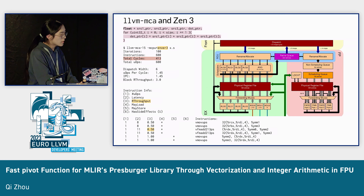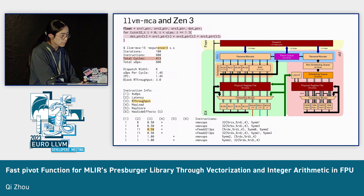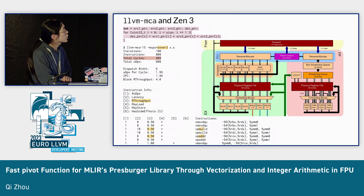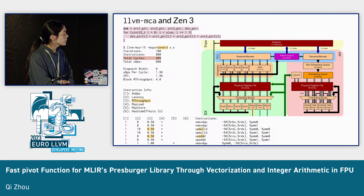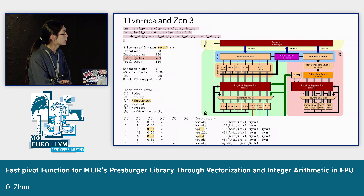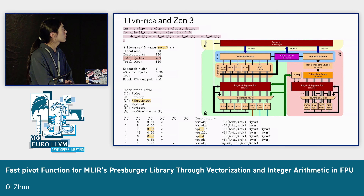The MCA also reports the execution takes 413 cycles in total iterating the block 100 times. When we change floating point to integer, because there is no fused multiply-add for integers, we have to use one instruction for add and one for multiply, doubling the instruction count. However, the microarchitecture provides four ALUs capable of doing either multiply or add, which doubles the execution units — causing a very similar total cycle count.